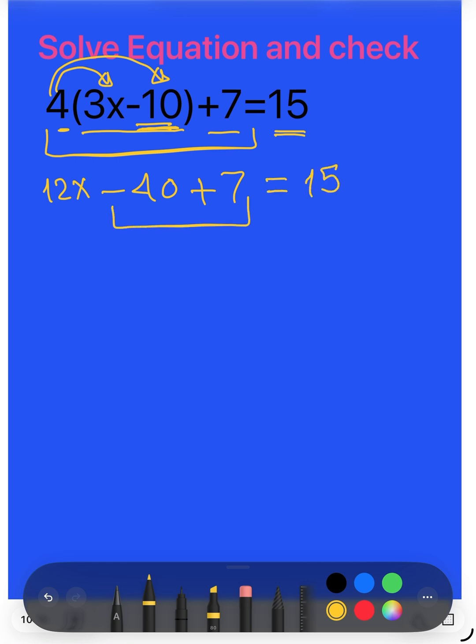I simplify here. We have number, no number. Negative 40 plus 7, then we have 12x minus 33 equals 15.